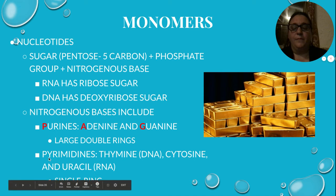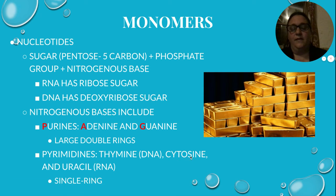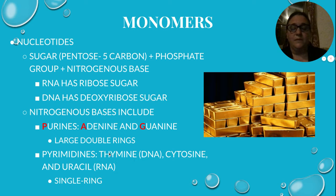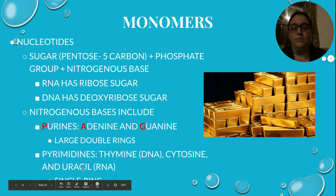The pyrimidines are thymine and cytosine — the T and the C. Now, if we're talking RNA, there's no thymine in RNA. That would be replaced by uracil, which is still a pyrimidine, a single ring.